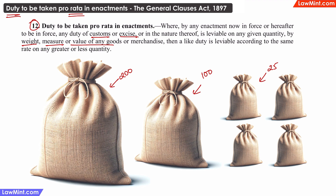Another example could be that a particular annual tax is introduced on companies during the middle of the financial year. Then the tax will be payable on a pro-rata basis for that financial year. For example, if a tax was levied at 12,000 rupees per year, and it was introduced in September and payable from October onwards, then the number of months remaining in that financial year are 6, that is October to March.